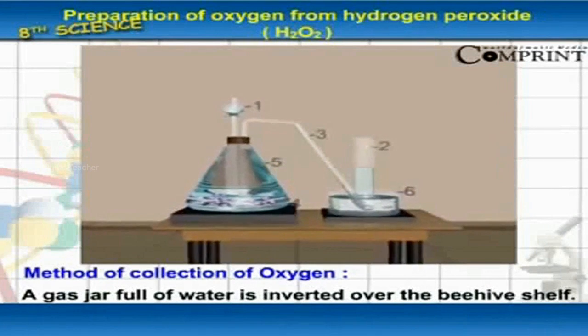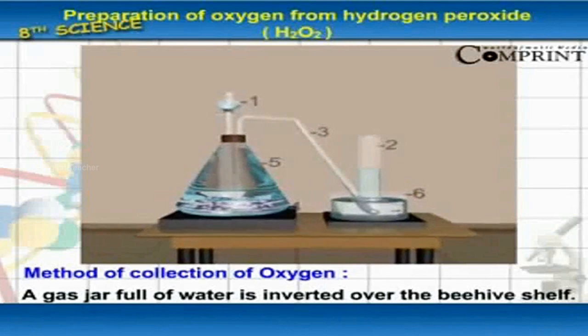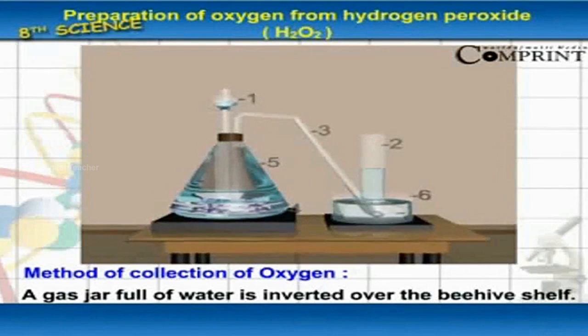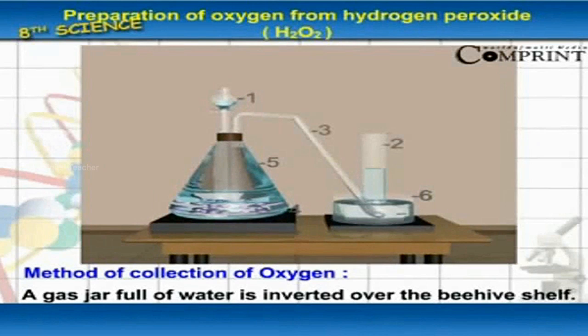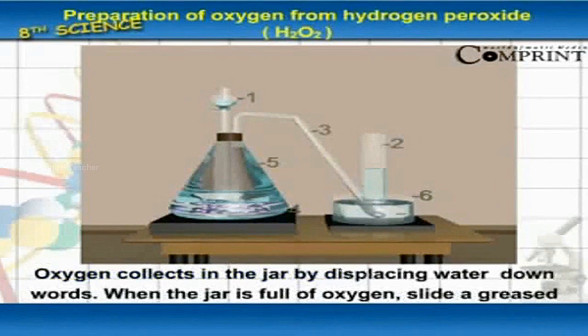Method of Collection of Oxygen: A gas jar filled with water is inverted over the beehive shelf. Oxygen collects in the jar by displacing water downwards.